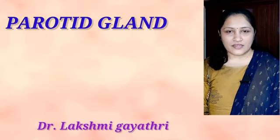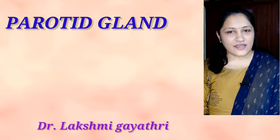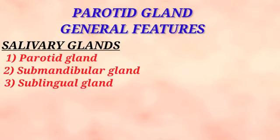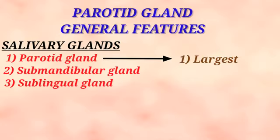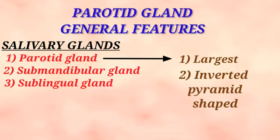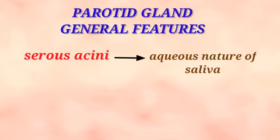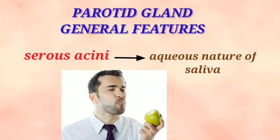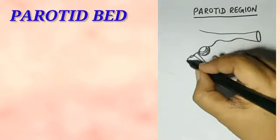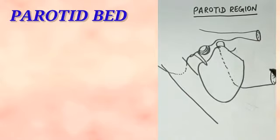With this introduction, we will discuss the gross anatomy and the surgical anatomy of the parotid gland. The three paired salivary glands are the parotid gland, submandibular gland, and sublingual gland. Among these, the largest is the parotid gland. This gland is shaped like an inverted pyramid and weighs about 25 to 30 grams. It is predominantly composed of serous acini and hence contributes to the aqueous nature of saliva. Its secretion increases when stimulated by food, which helps in chewing, deglutition, and swallowing.